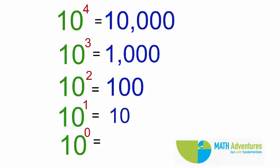If you observe this pattern, you will find that if 10,000 is divided by 10, I get 1000. That is, 10 to the power of 4 divided by 10 gives me 10 cubed.